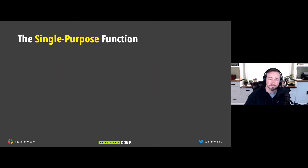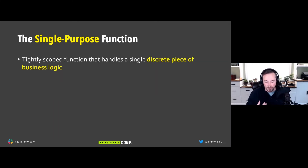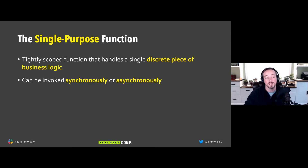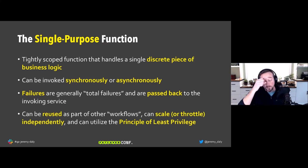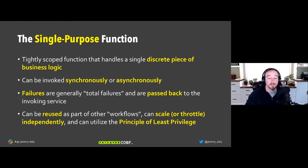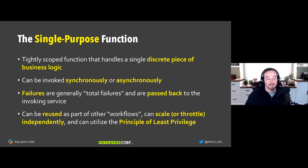The third type is the Single Purpose Function — each function executes a single discrete piece of business logic. This is what we should strive for. That single piece of logic can be reused, invoked synchronously or asynchronously, and if it fails it's generally a total failure that can be passed back to the invoking service. These can be reused in Step Functions, scaled or throttled independently, and have tightly scoped IAM roles following the principle of least privilege.